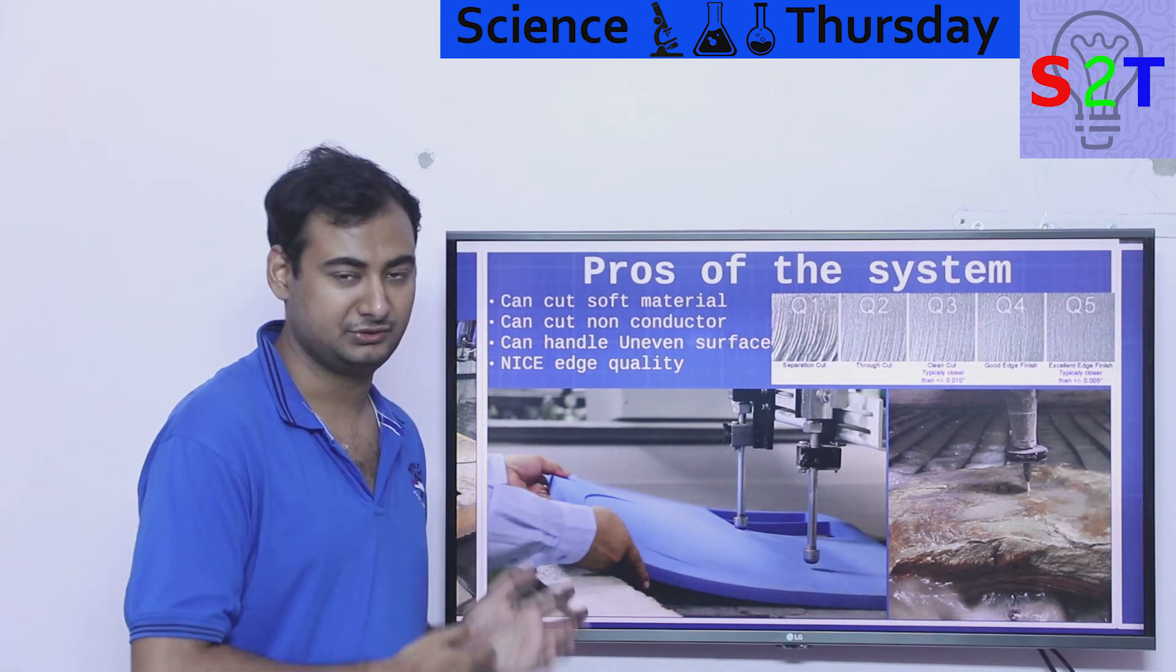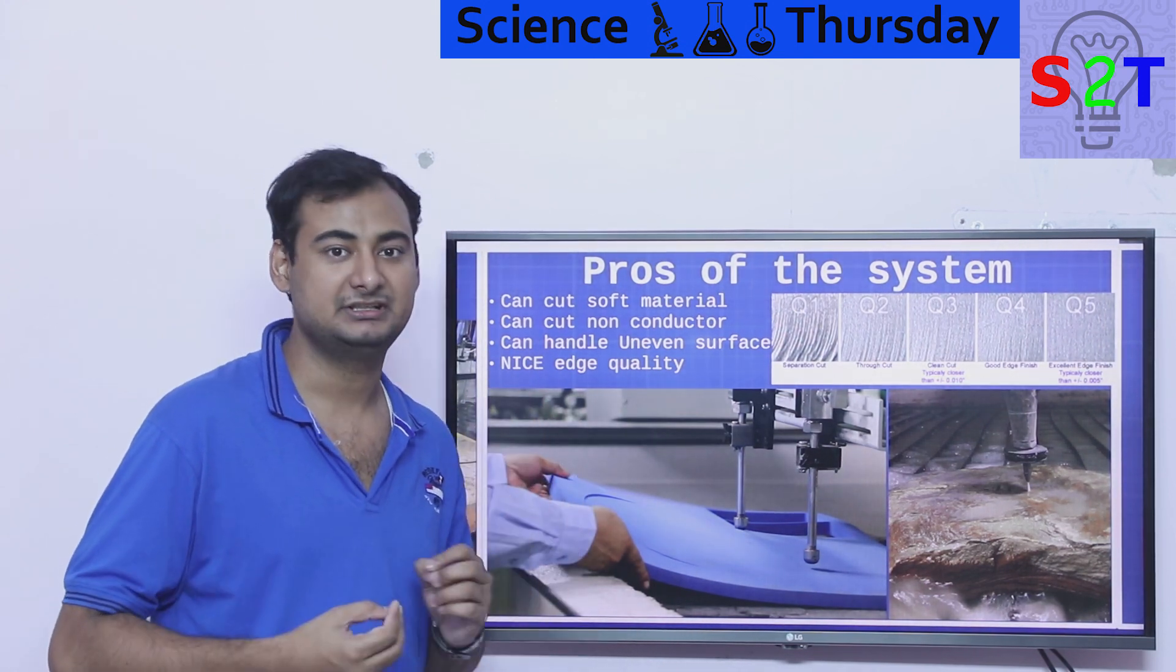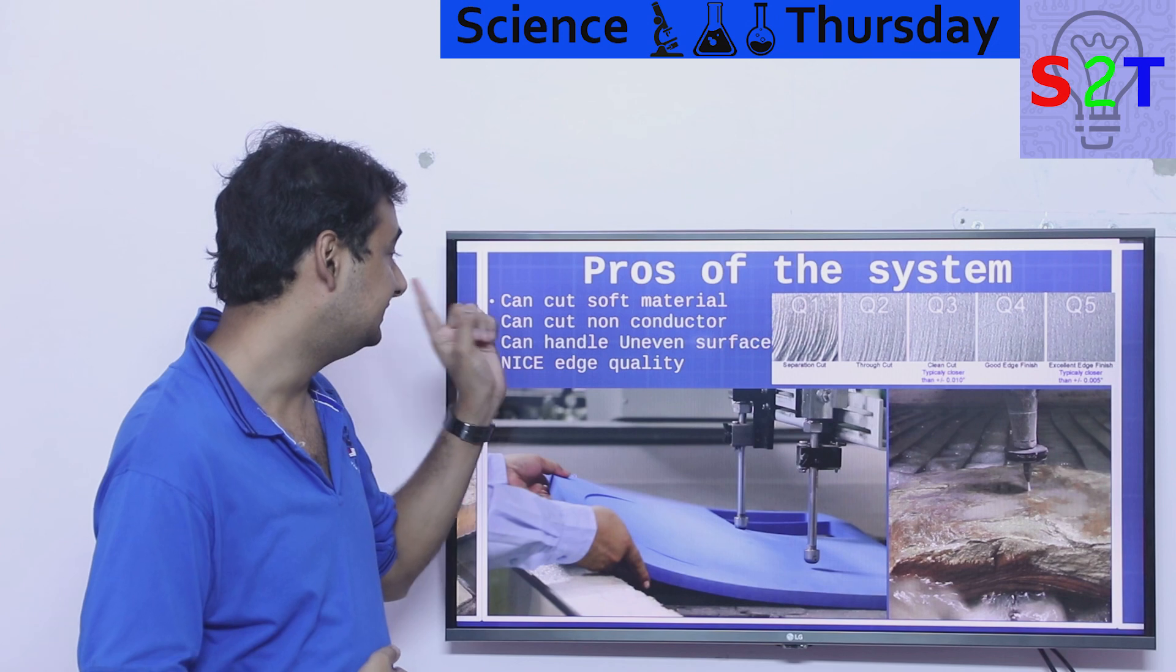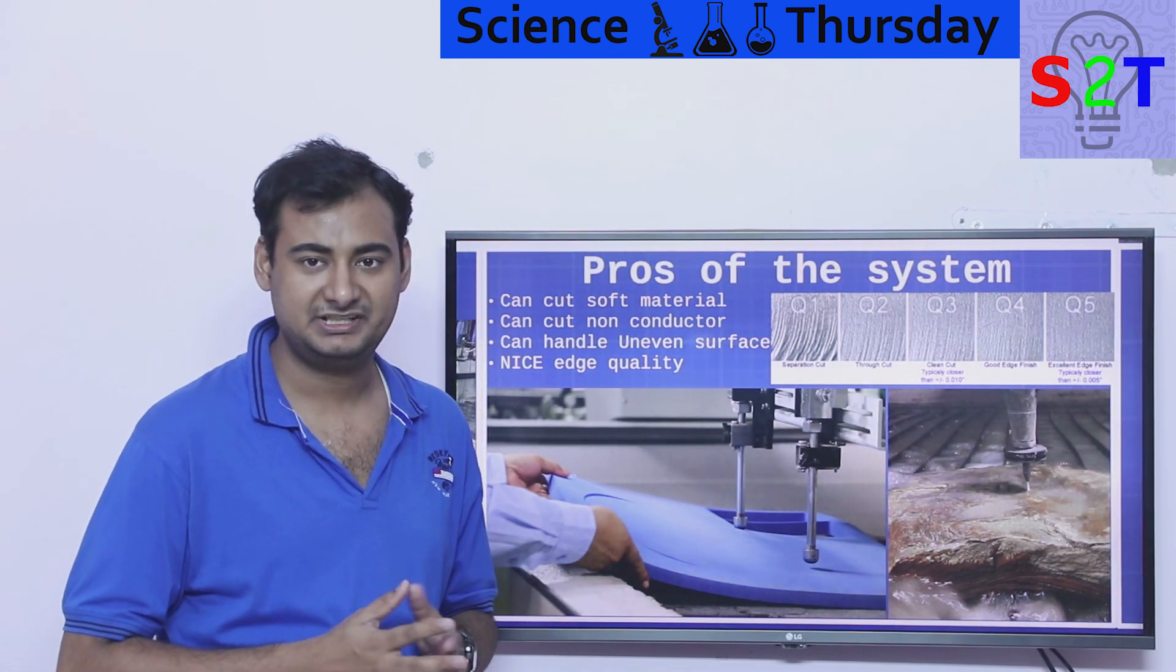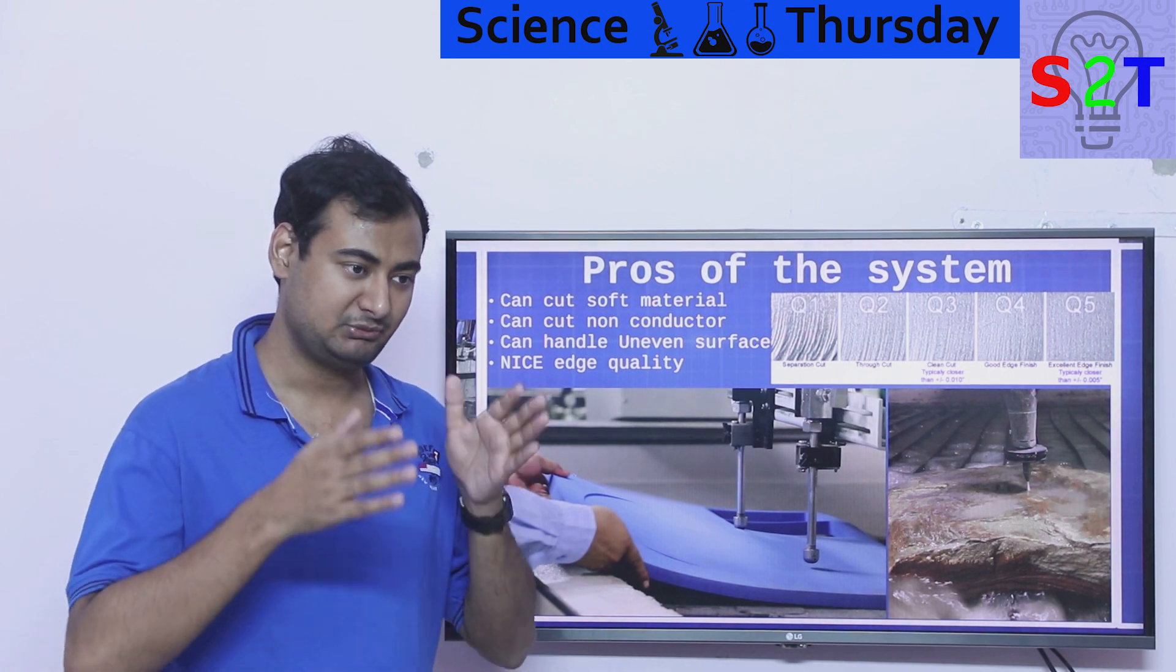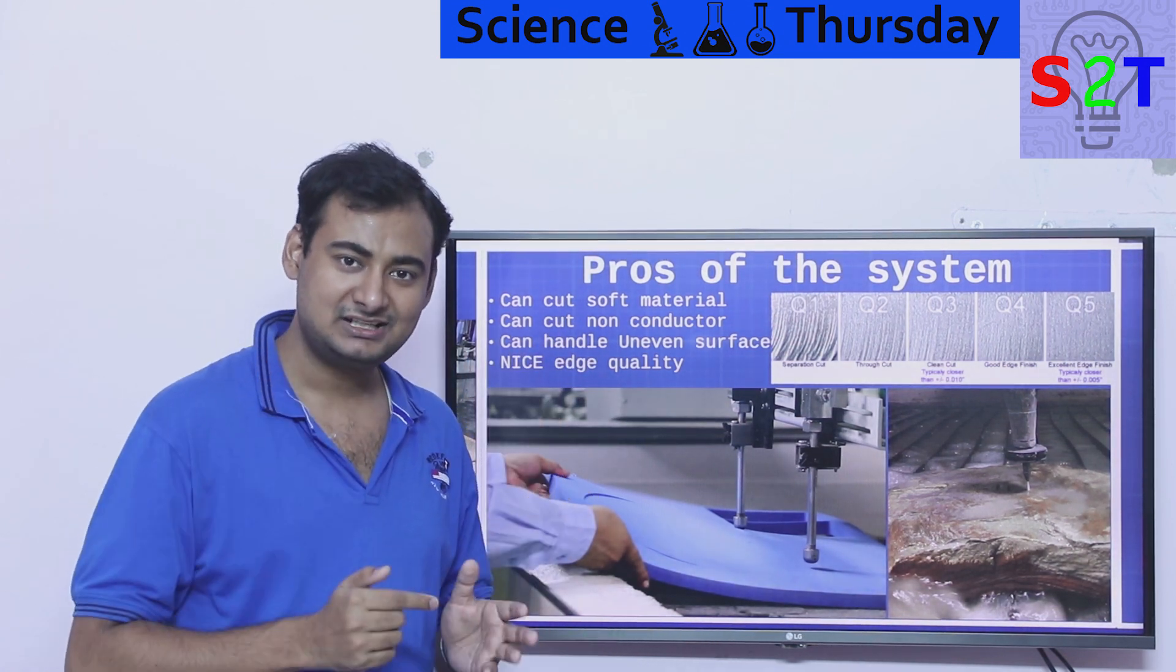Now what are the benefits of doing this? Let's say you bought the machine. What are the benefits you are getting? Well first, it can cut soft material. Now you might be like, okay, shouldn't cutting soft material be an easy task? Well you have to understand it this way. Let's say you have foam. You use laser on it. That's a fire hazard.